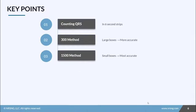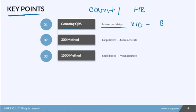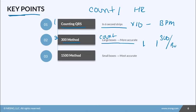To recap the key takeaways: the first method is counting the QRS — make sure you have a six-second strip, count QRS complexes, and multiply by 10 to get beats per minute. The second method is the 300 method — count the large boxes between two QRS complexes and divide 300 by that number. This method is more accurate than simply counting QRS.